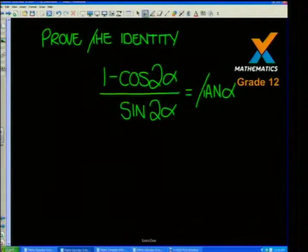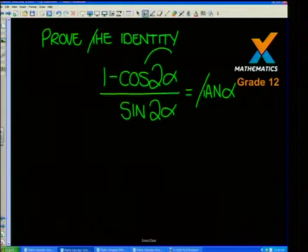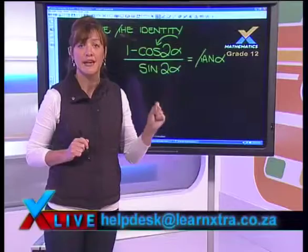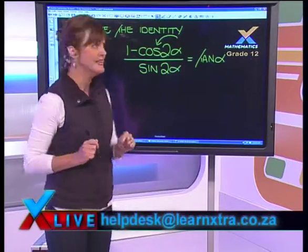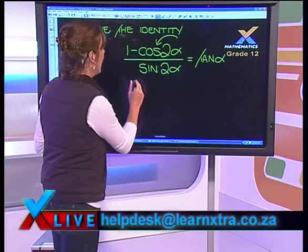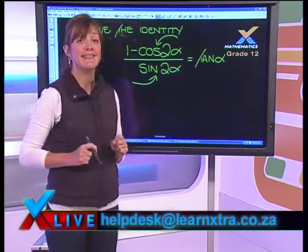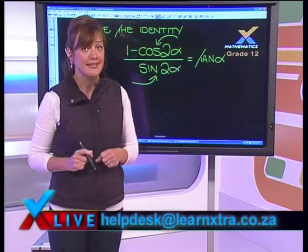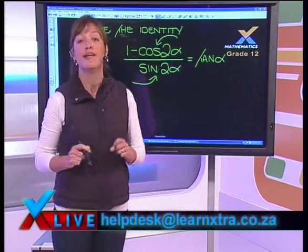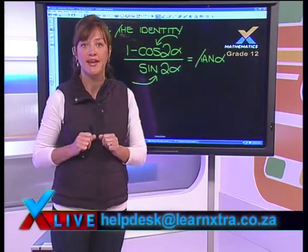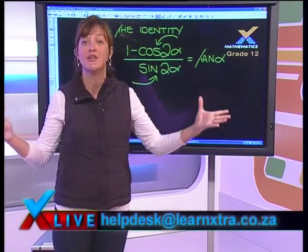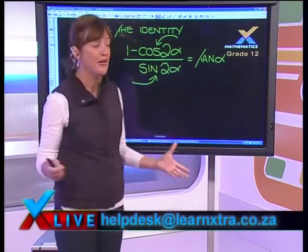The first thing I want you to notice is that in the numerator we have a cos double angle identity, and in the denominator we have a sine double angle identity. So we've got two double angles that we are going to expand.